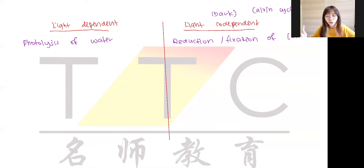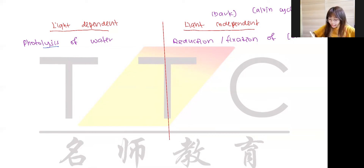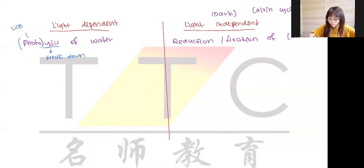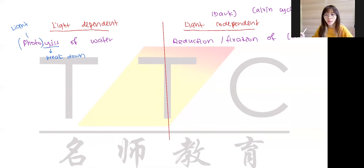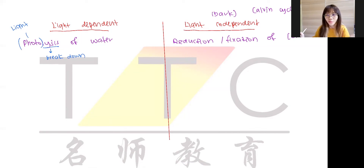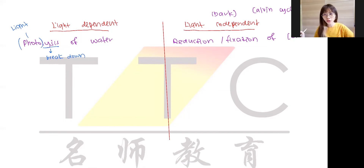We'll start from photolysis of water first, since you need light-dependent before light-independent. What does photolysis of water mean? 'Lysis' means breakdown, and 'photo' means light. So you need to break down water with the presence of light. You might remember 'hydrolysis' from Form 4 Chapter 4 — but we can't say 'hydrolysis of water' because that would mean breaking down water with water, which doesn't make sense. Water has a cohesion bond — it can't break itself. The breakdown must be done by light, so it's called photolysis of water.